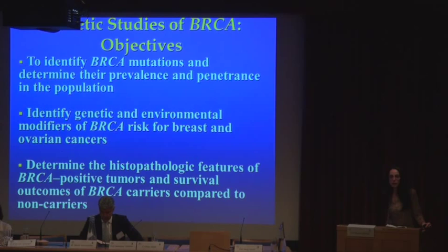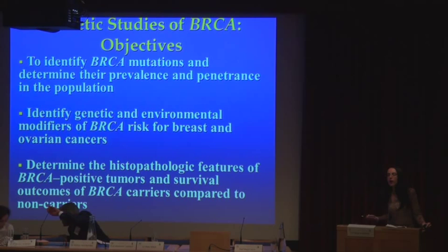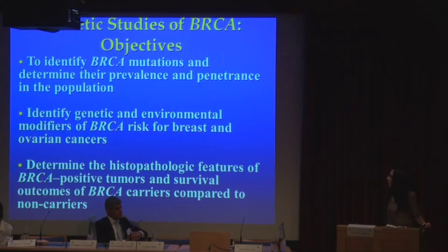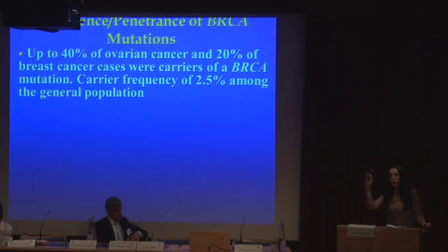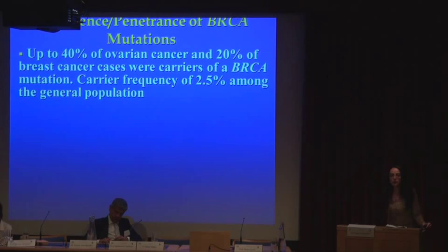Our findings have led to an understanding of the biologic mechanisms involved in disease pathology, but have also provided etiologic clues for developing and offering preventive and risk-reduction strategies to individuals who carry these mutations. With regards to objective one, in our studies we found that up to 40% of ovarian cancer cases and 20% of breast cancer cases in certain populations carry a mutation in the BRCA gene — and those are cancer cases unselected for age or family history of the disease.